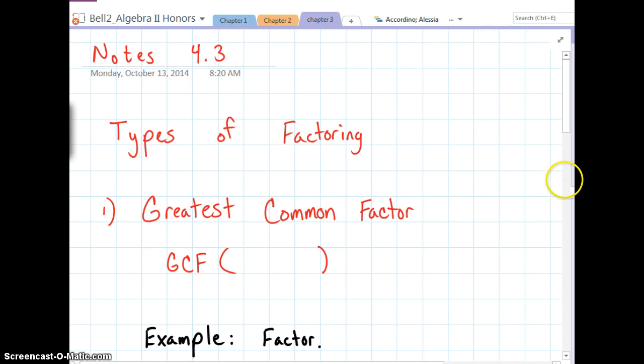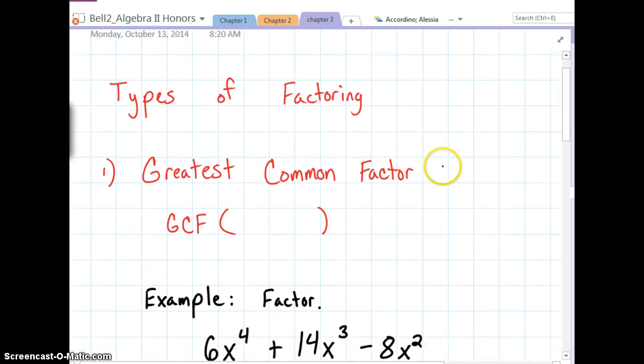The first type is greatest common factor. Greatest common factor is kind of like reverse distributing. When we're done with factoring out a greatest common factor, it's going to look like it needs distributed back in. It's going to end up outside a binomial or trinomial somehow, and it would look like we would multiply it back in.